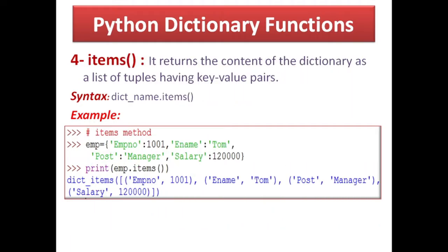Next is the items() function. It returns the content of the dictionary as a list of tuples having key-value pairs. Suppose this is the dictionary — EMP.items() लिखने पर you get a list of tuples. The list symbol is there, and then each key-value pair forms a tuple: (EMPNO, 1001), (ename, Tom), (post, manager), (salary, 1,20,000). So items() displays a list of tuples.